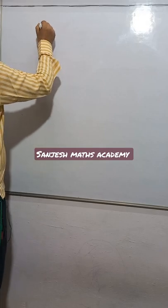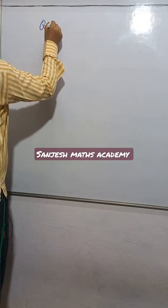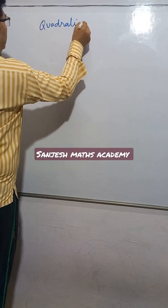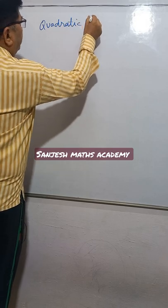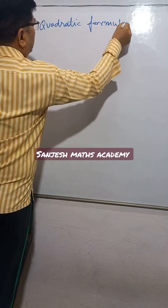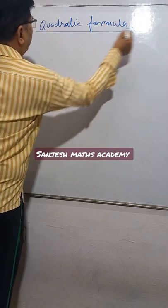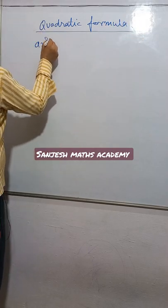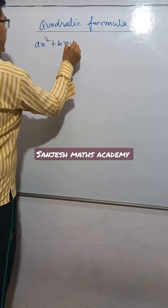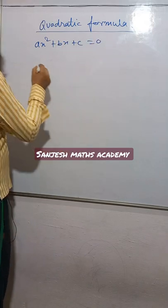Hello students. This quadratic formula — Ax² + Bx + C = 0 — is called the quadratic equation.